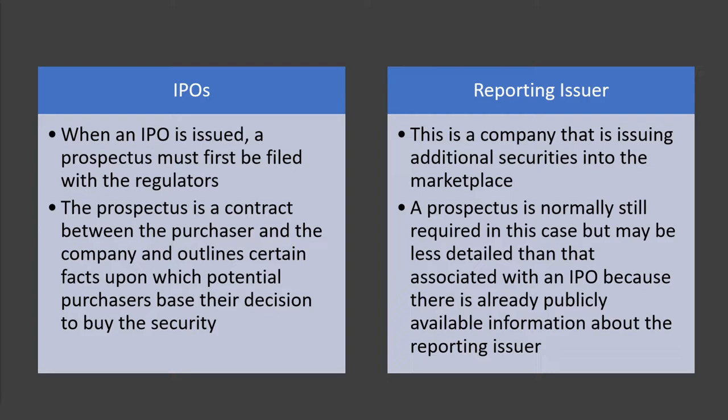Some important definitions in this chapter: First, an IPO. When an IPO, or initial public offering, is issued, a prospectus must first be filed with the regulators. The prospectus is a contract between the purchaser and the company, and it outlines certain facts upon which potential purchasers base their decision to buy the security. Next, a reporting issuer is a company that is issuing additional securities into the marketplace. A prospectus is normally still required, but may be less detailed than an IPO prospectus because there is already publicly available information. An IPO is a private company becoming public for the first time, whereas a reporting issuer is already a public company issuing more shares.